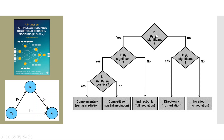Continuing the flowchart: if p1 and p2 are significant but p3 is not significant, this is the case of full mediation — only the indirect effect is present. If p1 and p2 are not significant but p3 is significant, it means there is only a direct effect — no mediation present. If all three are insignificant, there is no effect and no mediation.